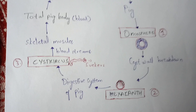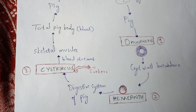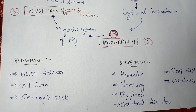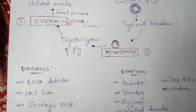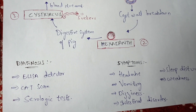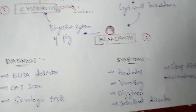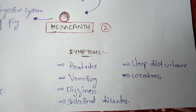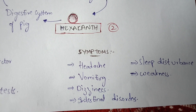To summarize, the three larval stages are: oncosphere stage of larva, hexacanth stage of larva, and cysticercus stage of larva. For diagnosis, doctors use a CT scan and serologic tests for persons infected with Taenia solium. The symptoms of this disease include headache, vomiting, dizziness, intestinal disorders, sleep disturbance, and weakness.